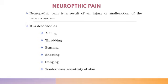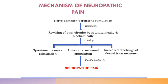Neuropathic pain is a type of chronic pain resulting from injury or malfunction of the nervous system. It is described as aching, throbbing, burning, shooting, stinging, or causing tenderness and sensitivity of the skin. The mechanism involves nerve damage or persistent stimulation of nerves resulting in rewiring of pain circuits both anatomically and biochemically, causing: spontaneous nerve stimulation, autonomic neural stimulation, and increased discharge of dorsal horn neurons. Any one or all three may be present, resulting in neuropathic pain.